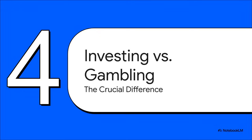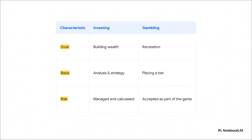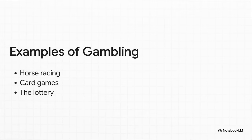This brings us back to that first question: the huge difference between investing and gambling. It all comes down to your mindset and your approach. An investor's goal is to build wealth over time, based on analysis and strategy. A gambler's goal is recreation — it's about the thrill of placing a bet. The biggest difference is how they look at risk: an investor works to manage and calculate it; a gambler just accepts it as part of the fun. Betting on a horse race, playing cards for money, or buying a lottery ticket — those fall squarely into the gambling camp, because the outcome is almost completely left to chance.